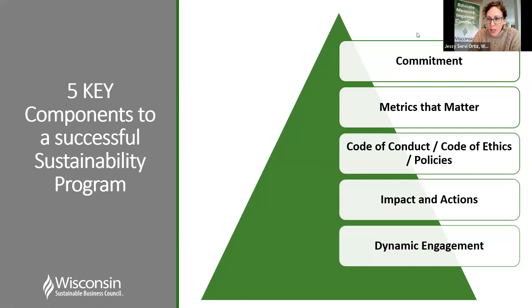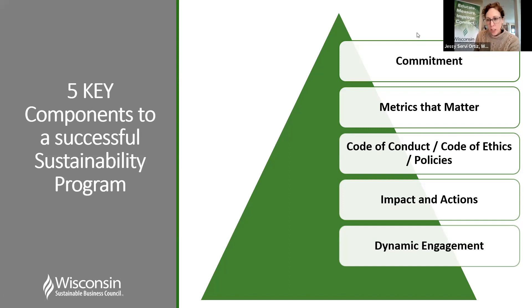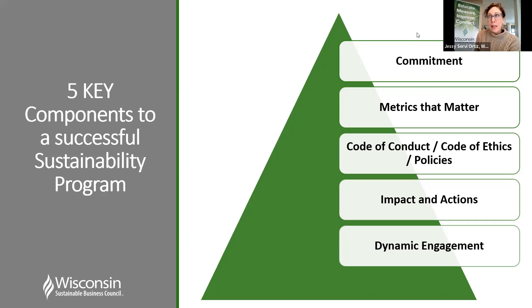The first of the five key components to a successful sustainability program is commitment. You need to have a commitment from your organization or at the personal level — this can look like a sustainability commitment statement, a sustainability policy, or a vision statement. I recommend working on this continuously throughout your process of building and integrating a sustainability program. It's what we like to call your 'true north' — it guides you throughout and helps you stay focused on what's a priority to your organization.